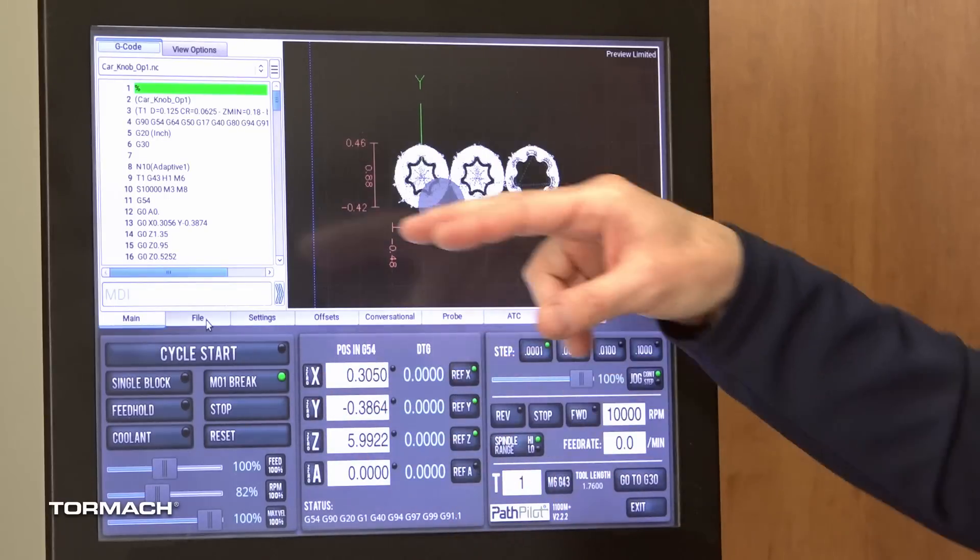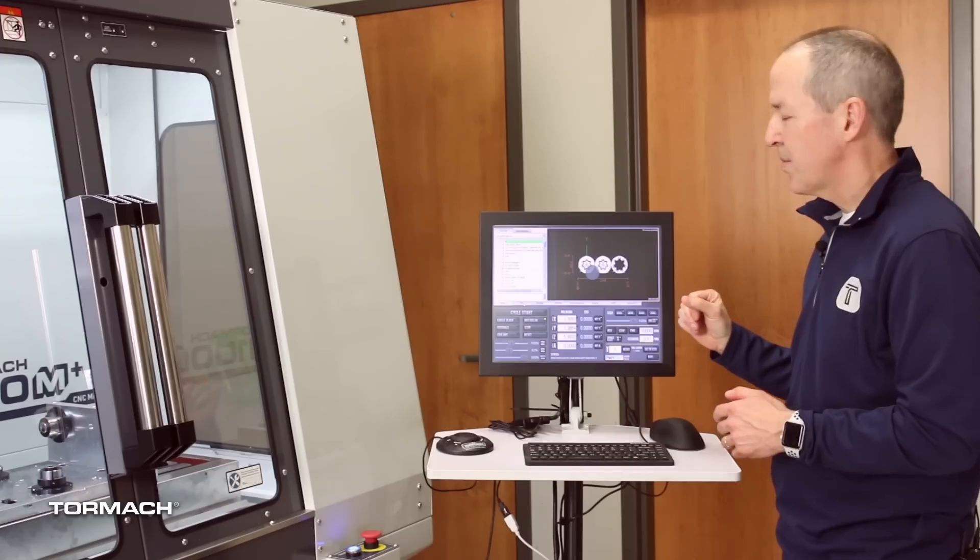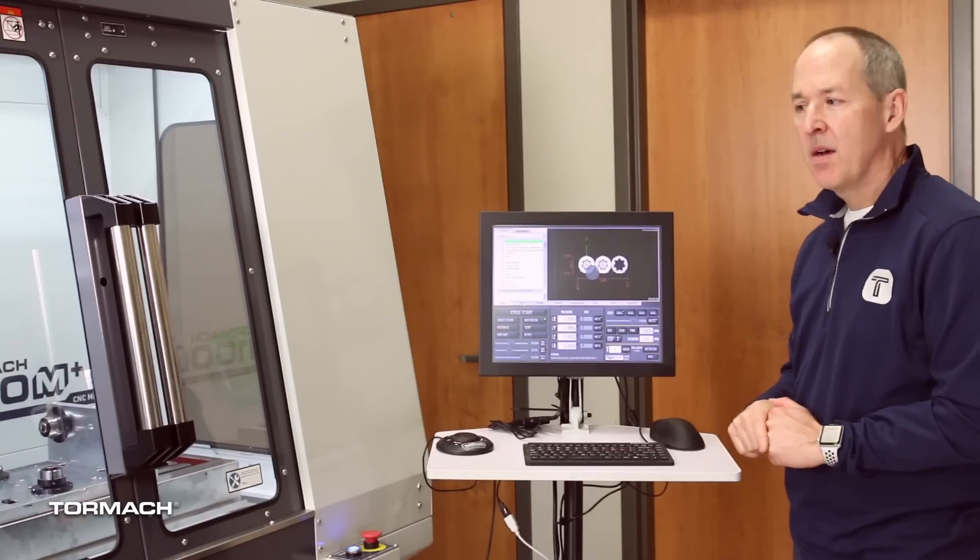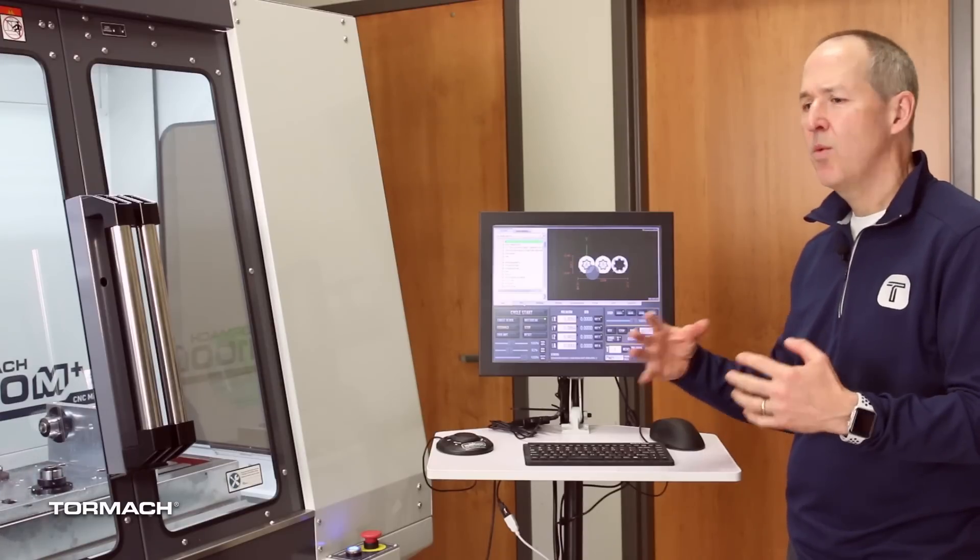Formally, whenever you clicked stop, we would always rewind the display and put the display back up at line one. And it kind of, if you broke a tool in the middle or something, sometimes it's hard to understand, well, where did I leave off?